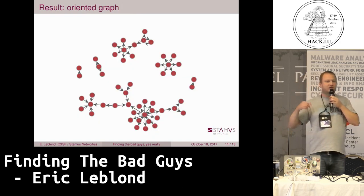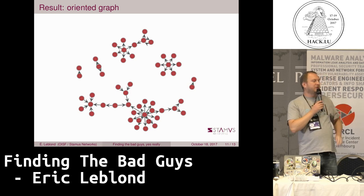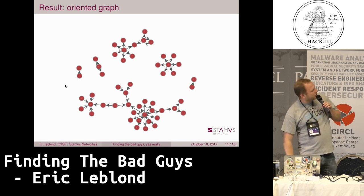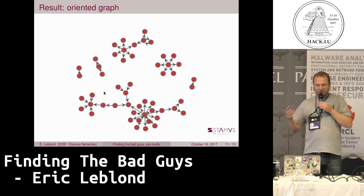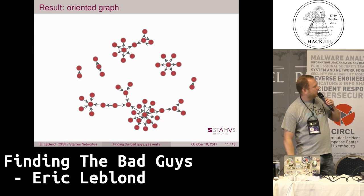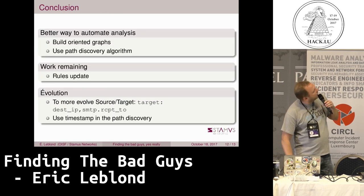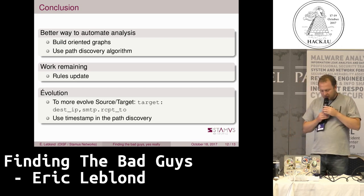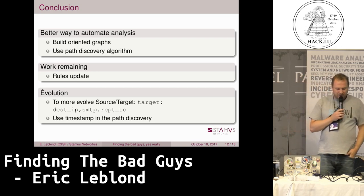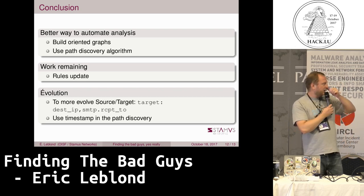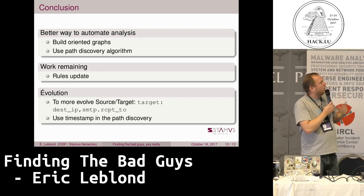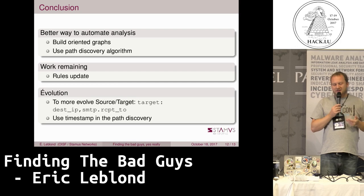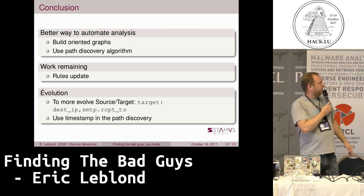If we take the same dataset with the new information, what we can see is that what was previously looking like a huge possible compromise chain is in fact just some linked nodes without any path. This way we can clearly see that it was not that big an attack on this network. This introduction of source and target — as origin and destination of the attack — will allow you to build better visualizations, do more automated analysis, and find paths inside the network.